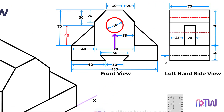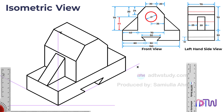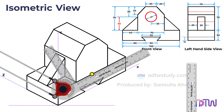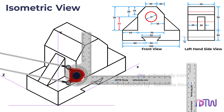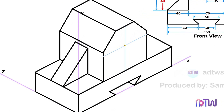To draw the 30 millimeters diameter hole on the center portion, we first need to locate its center position. The center of the hole is exactly in the middle and 30 millimeters below from the top of the center portion. Draw vertical and horizontal lines — the vertical line should be 35 millimeters from the side and the horizontal line 30 millimeters below from the top. The intersection of these lines represents the center point. Since the diameter is 30 millimeters, construct a square with sides measuring 30 millimeters at this center point.